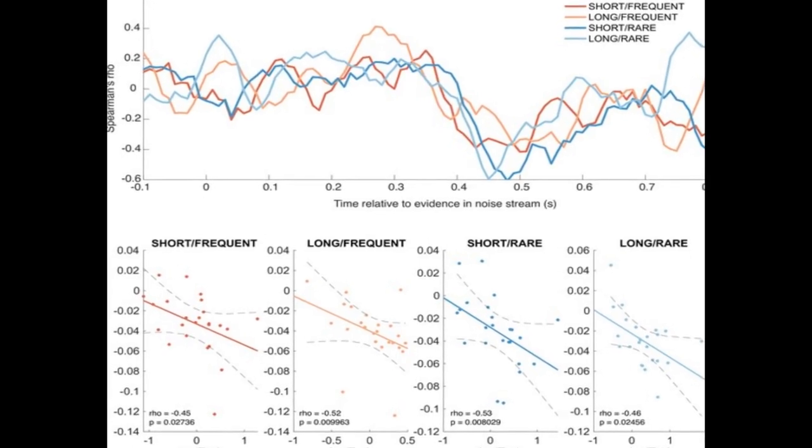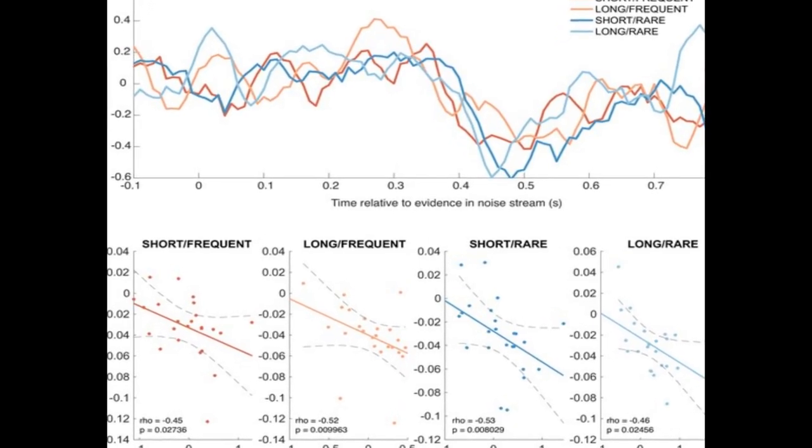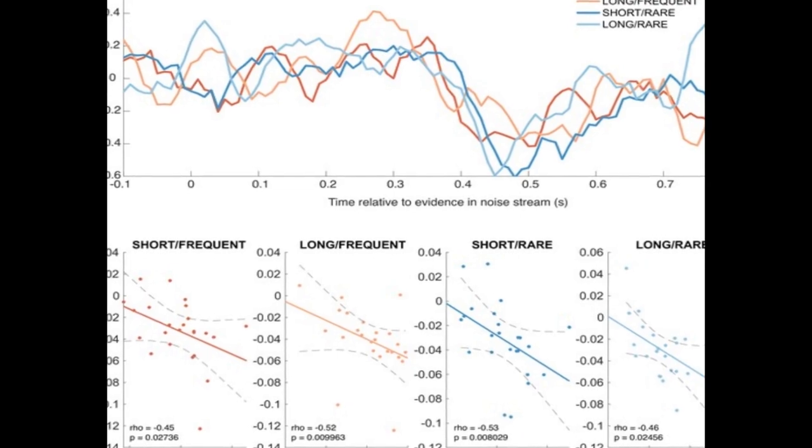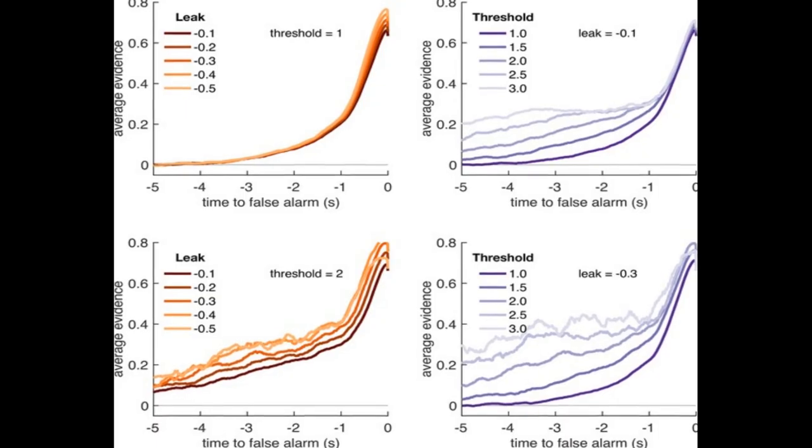The study investigates how the centroparietal positivity, CPP, adapts to different environments that place different constraints on evidence accumulation, and shows that adaptations in evidence weighting are reflected in changes in the CPP.